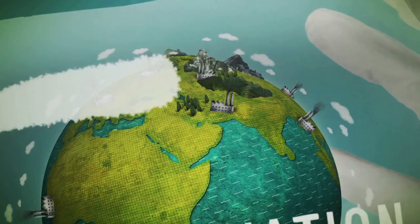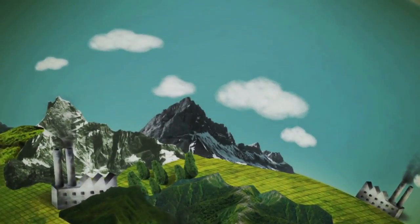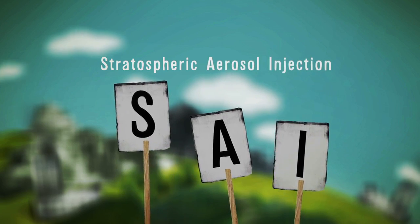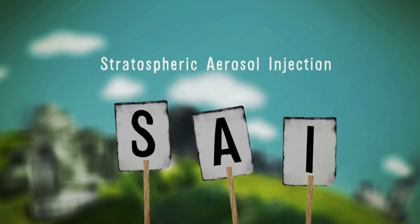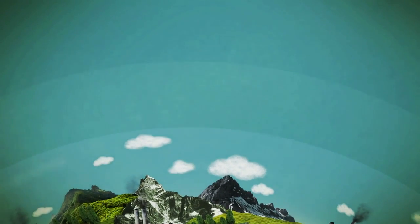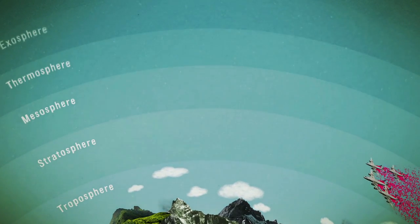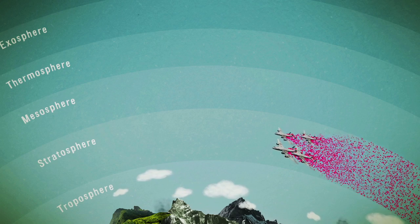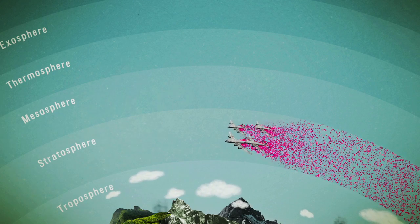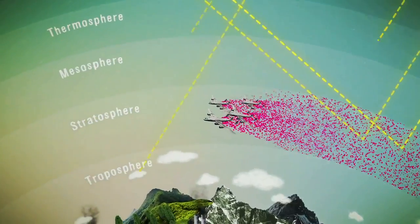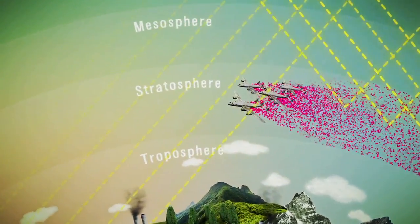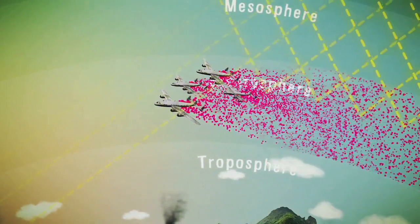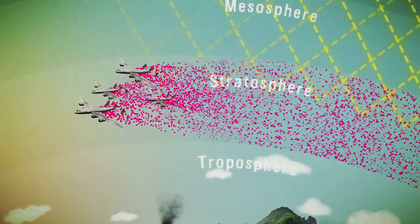Regarding solar radiation management, one technology in particular is the subject of research, so-called stratospheric aerosol injection. This might, for example, involve large numbers of aircraft scattering large quantities of particles, such as sulfur dioxide, into one specific layer of the atmosphere, namely the stratosphere. The particles would then act as a reflective filter, throwing a percentage of solar radiation back into space, and thereby preventing it from heating up the atmosphere in the first place.